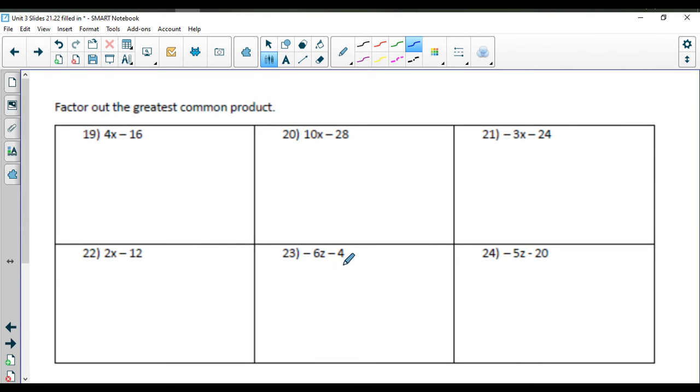At the bottom, you had factoring practice, so we're factoring out the greatest common product here. So we're going to factor out a four, and that'll leave us with x minus four. Over here, we are going to factor out a two, which will leave us with five x minus fourteen.